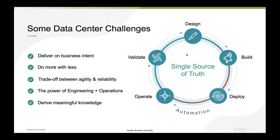How can Juniper help us with the trade-off between agility — fast introduction of new services and capabilities that bring business outcomes — and the main responsibility of network operations, which is to provide a reliable and secure network environment? That's a very sensitive balance between agility and reliability. How can Juniper help us find the power of engineering and operations working together — similar to how DevOps teams work — so that workflows are truly integrated and engineering and operations teams know exactly what each is doing and the impact on the fabric?